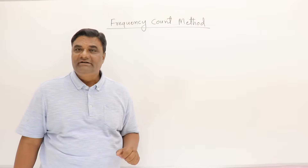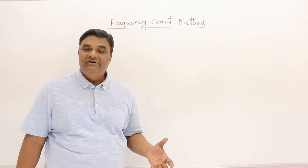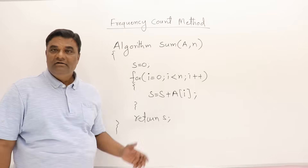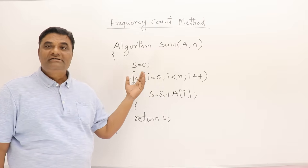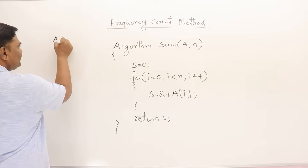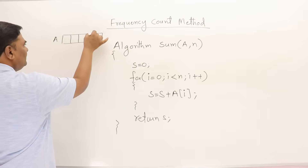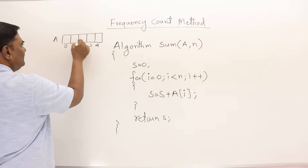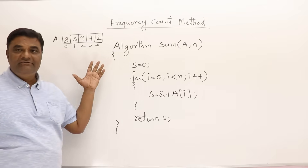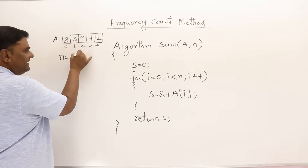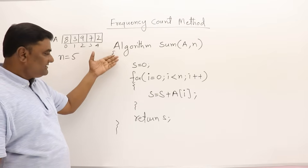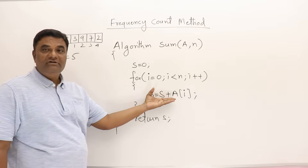Next is the frequency count method. We will take some algorithms and find out how this method is useful for finding the time complexity of algorithms. This algorithm is for finding the sum of all the elements in an array. Assume that there is an array of some elements. I have taken an array of size 5 with some elements in it, so n is 5. This algorithm is finding the sum of all the elements in an array.